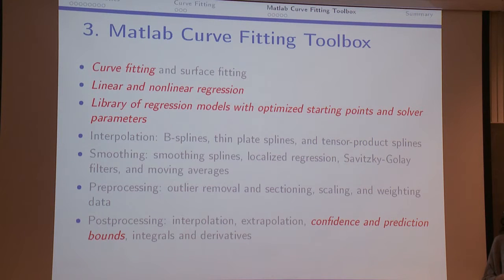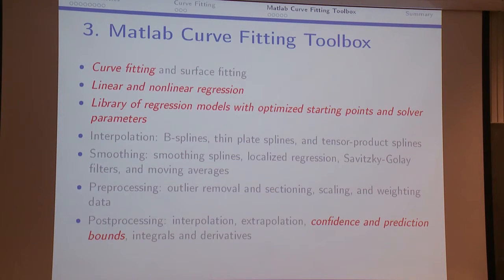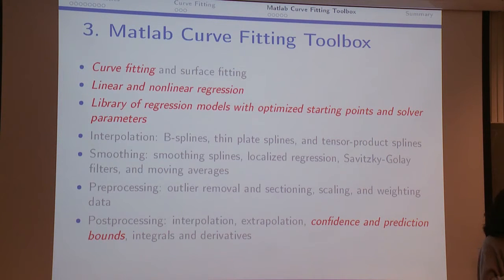It has a great library of regression models with optimized starting points and solver parameters — boundaries for coefficient estimates in the model. It also has interpolation and smoothing methods with their respective approaches, and pre-processing features: outlier removal, sectioning, scaling, and weighting. I will briefly show confidence and prediction bounds because they are relevant to the confidence interval method we already discussed.